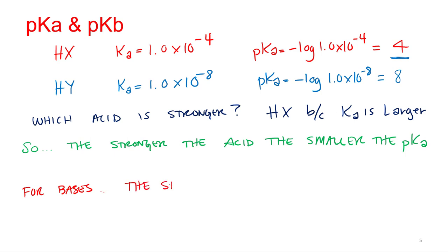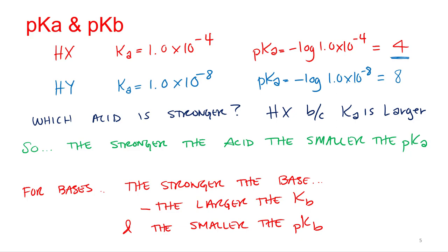So for bases, the stronger the base, the bigger the KB and the smaller the PKB. So same thing as the acid, we're just using KB and PKB.